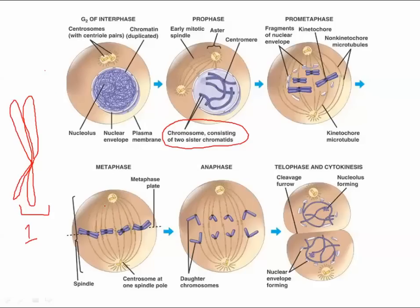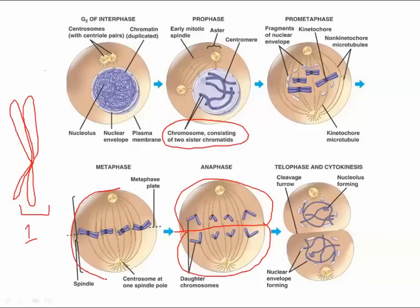After the chromatids have divided and separated, each is back to being a chromosome. So this cell over here will have four chromosomes, and this cell over here will also have four chromosomes. The original cell has four chromosomes, each consisting of two sister chromatids.